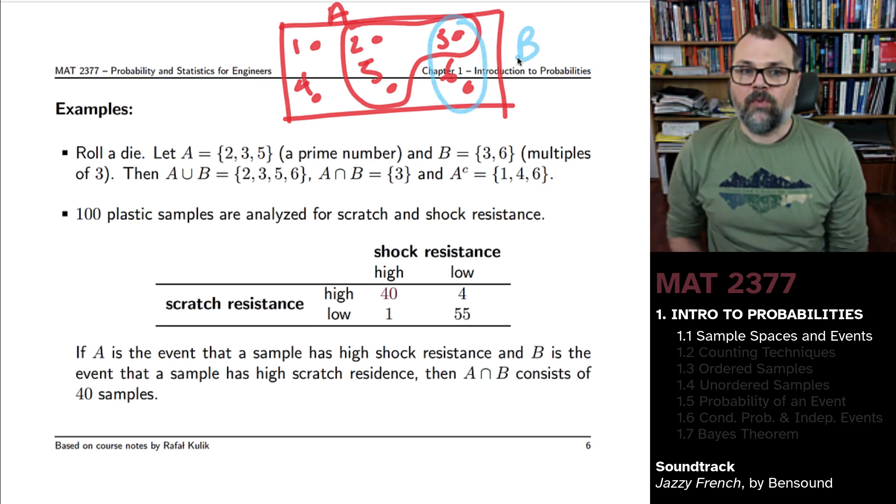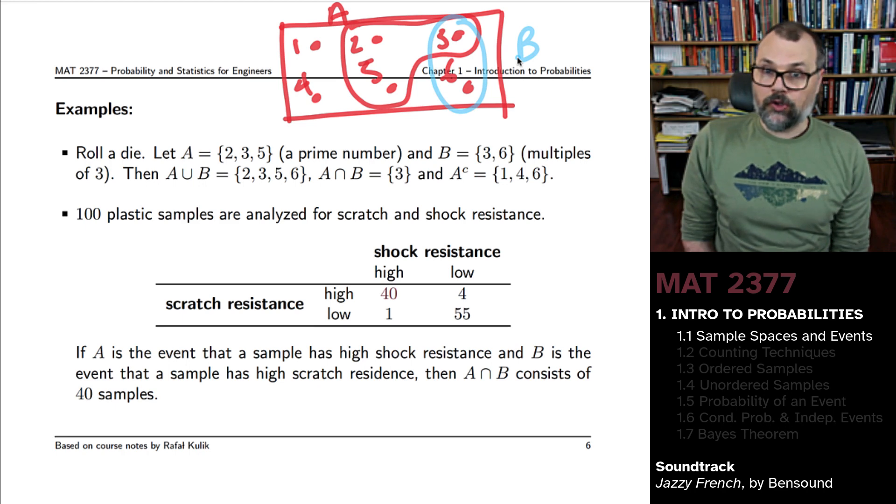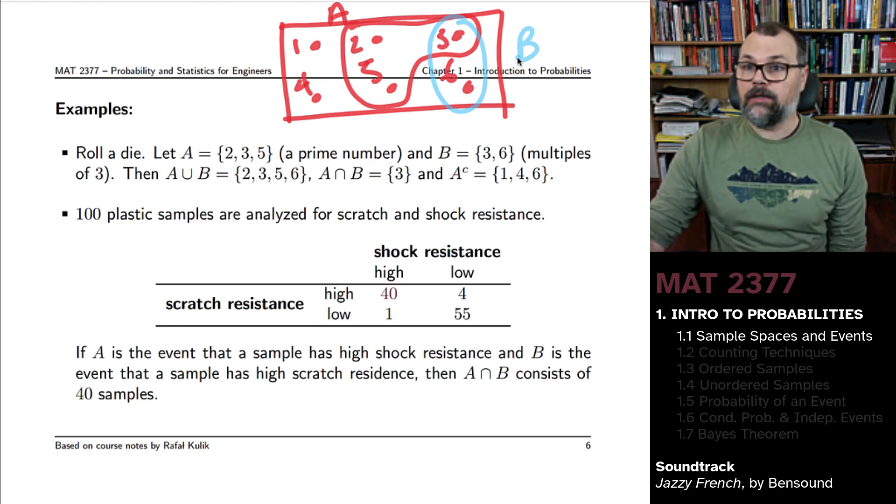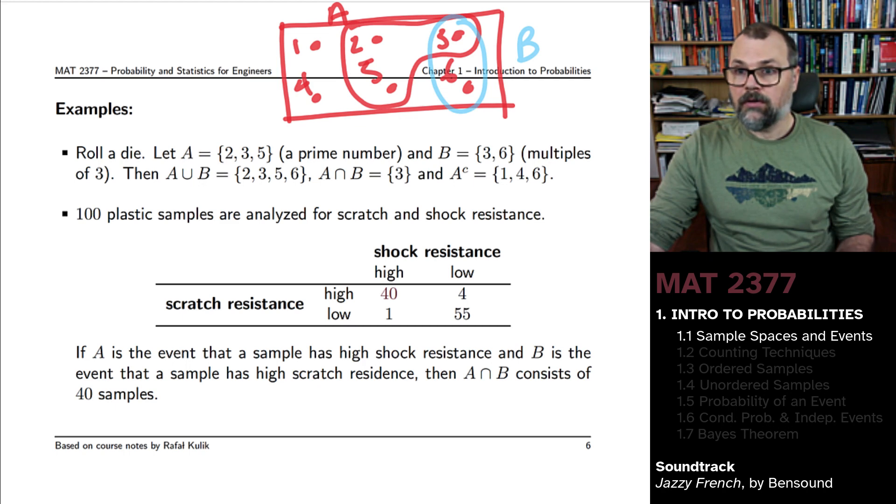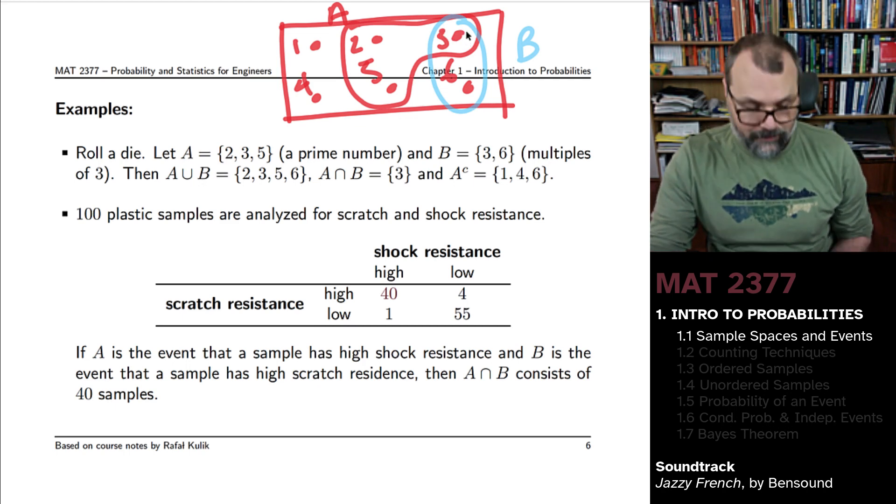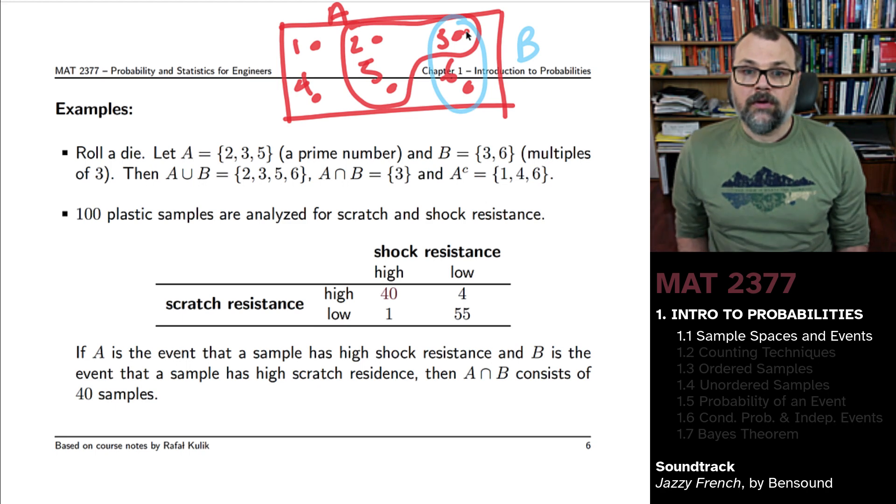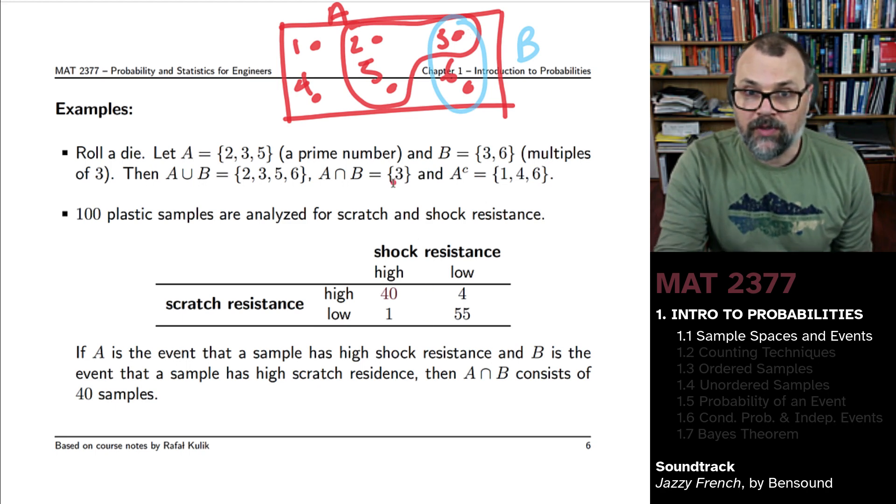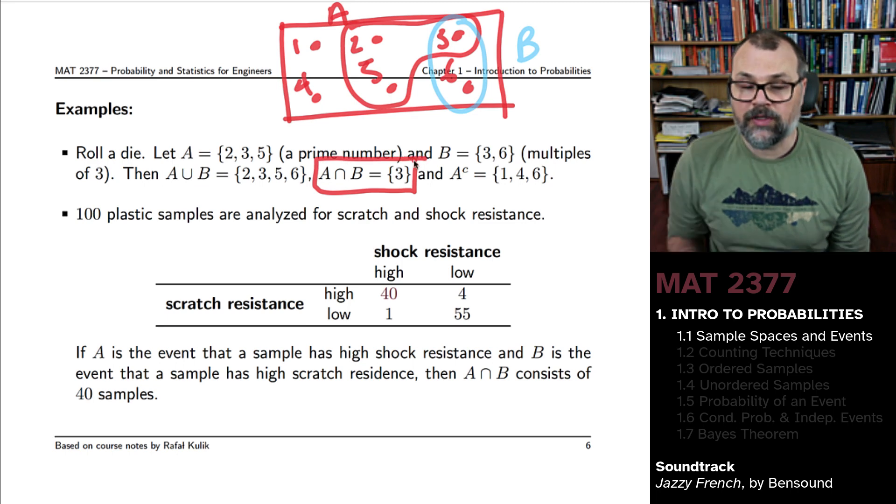We see that these events are not mutually exclusive because their intersection is not empty, right? A intersection B would be three. What we have is that they cannot be mutually exclusive.